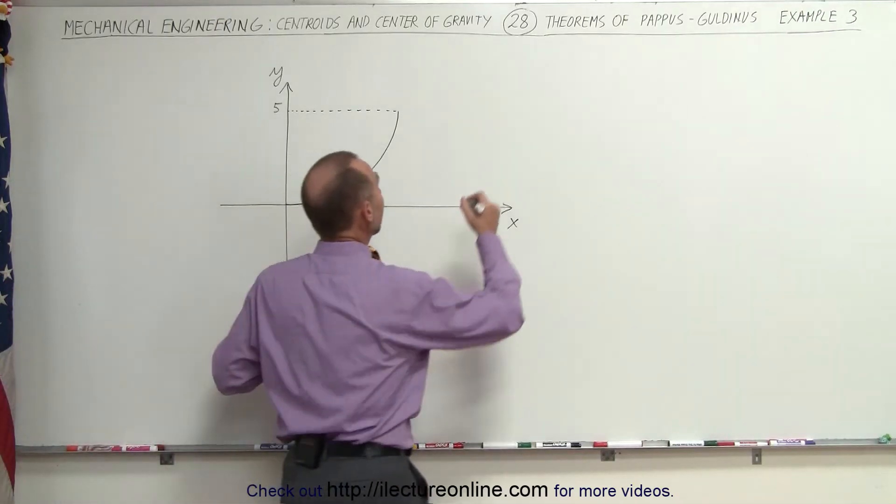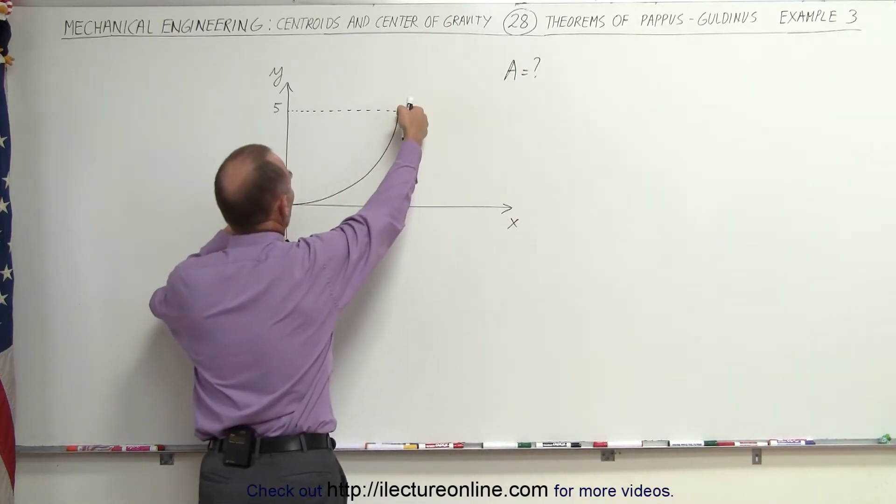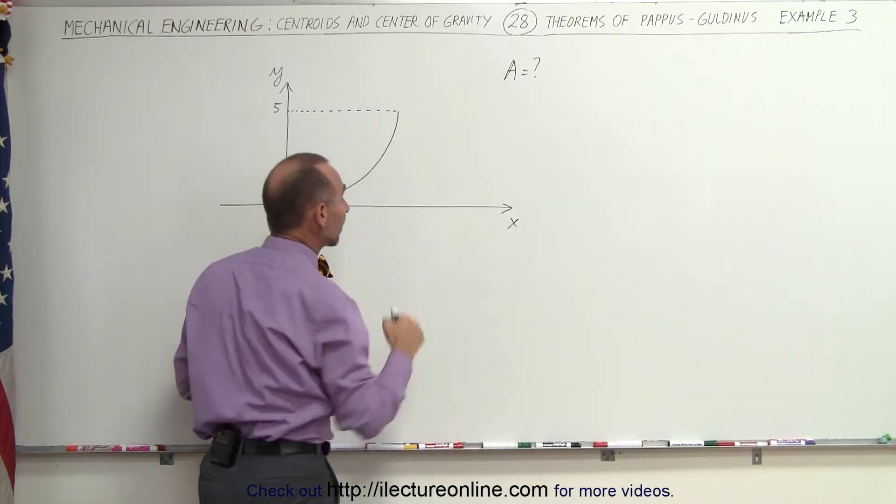In this case we're trying to find the area of the object that is produced when we take this curve and rotate it about the x-axis.